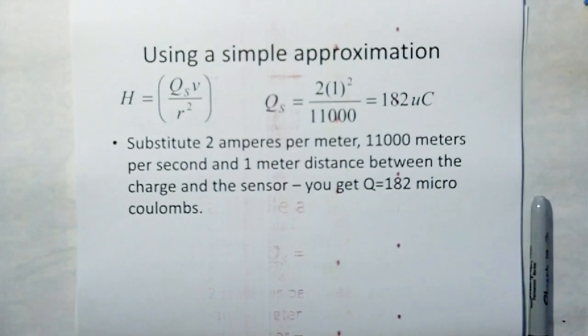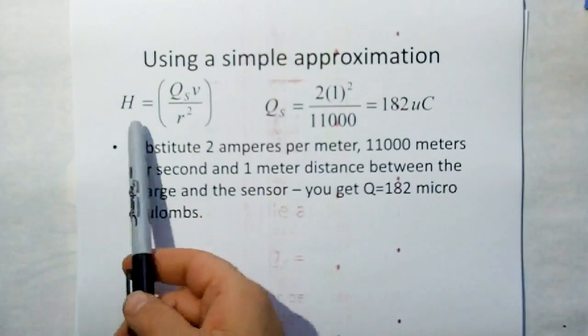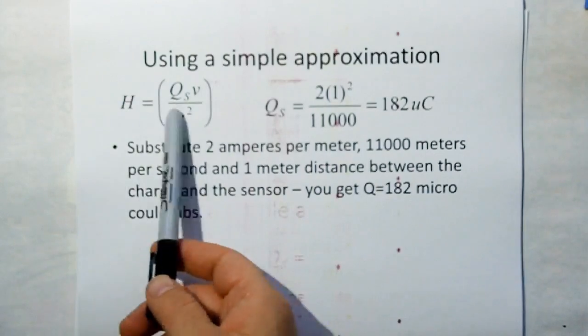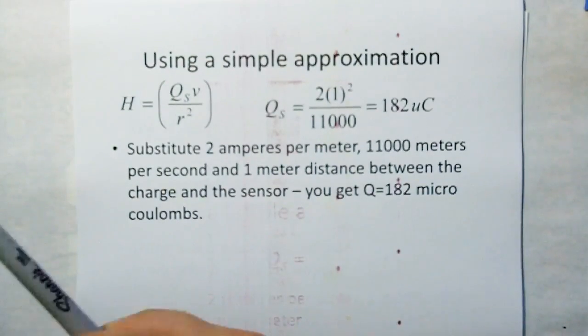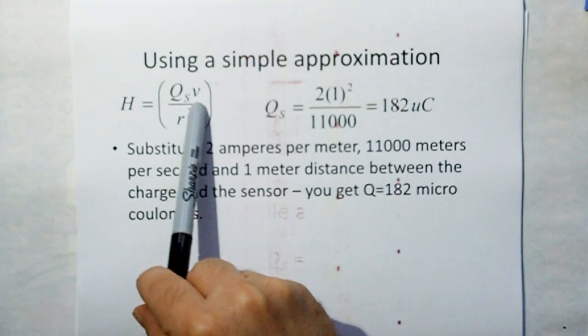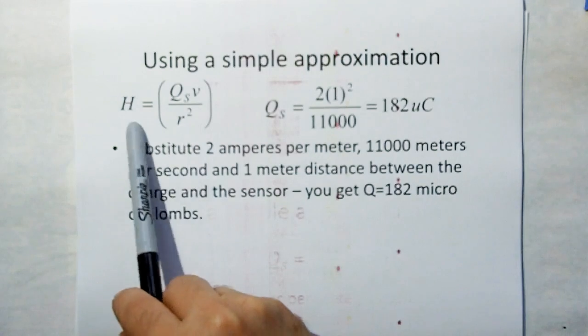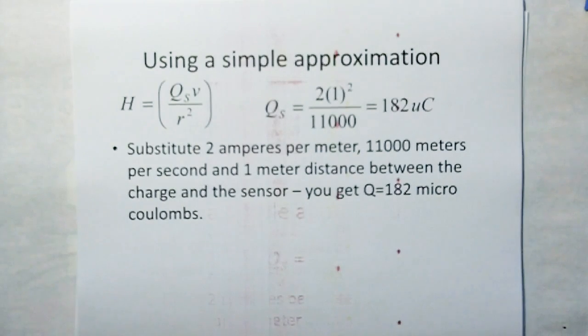So using a simple approximation, this is an approximation. There's no vectors here. This just gives magnitude. If we take the charge on the sphere, multiply it by its velocity through the ether, and at a distance r from the sphere, we should see a magnetic field of intensity h amperes per meter.